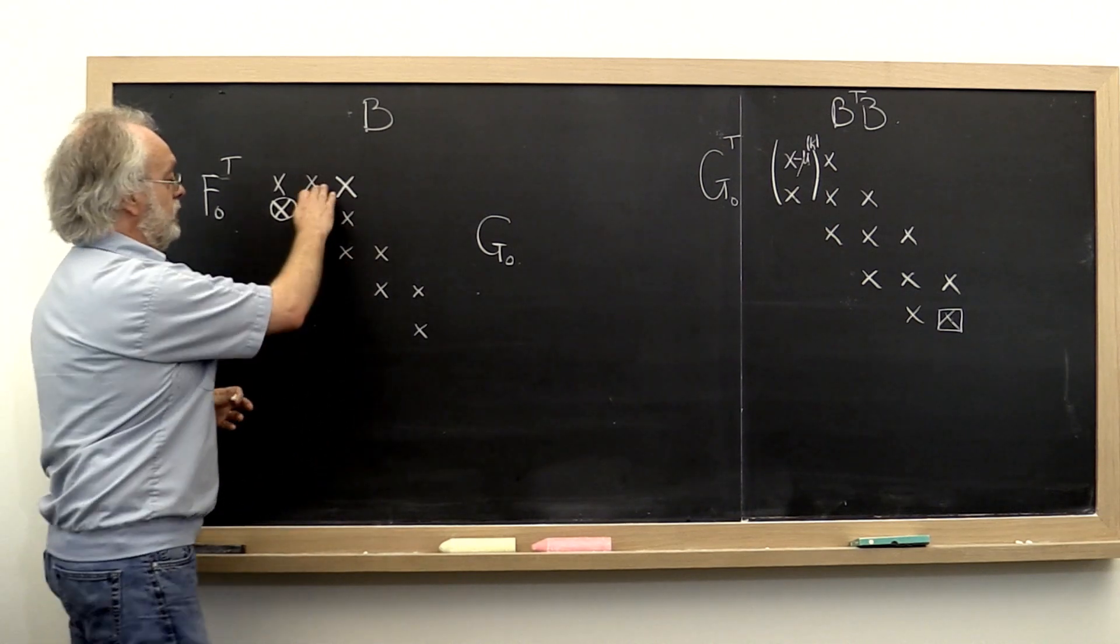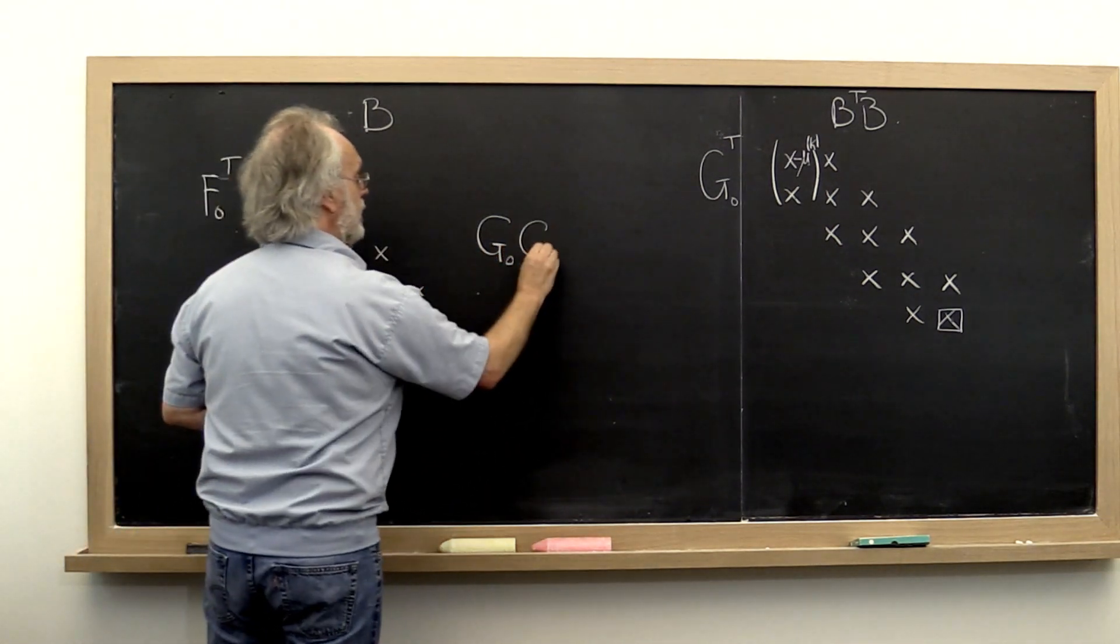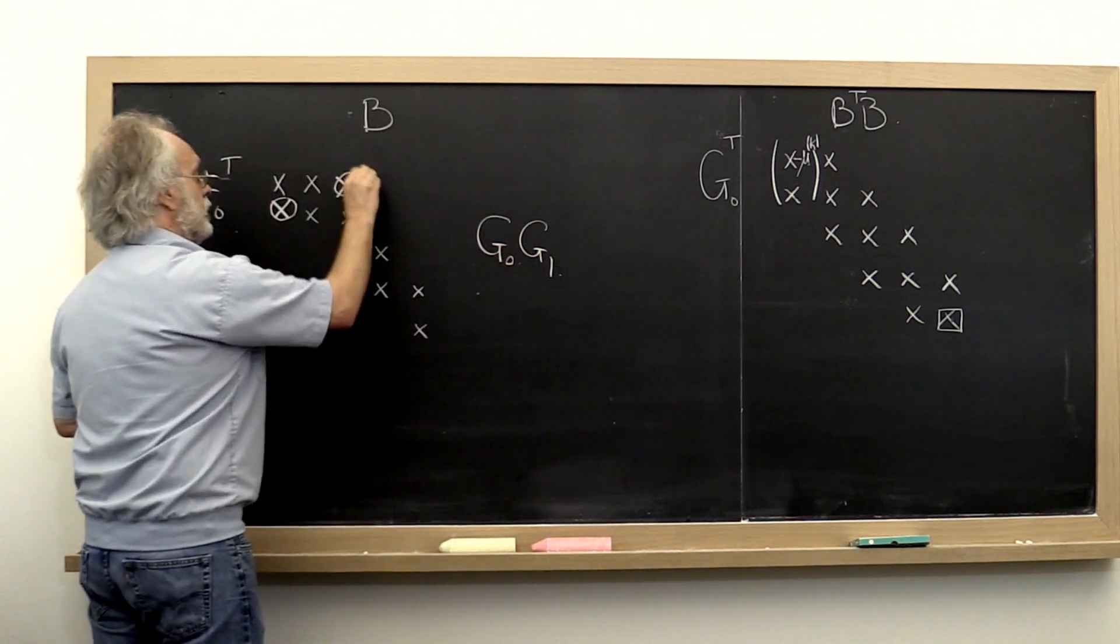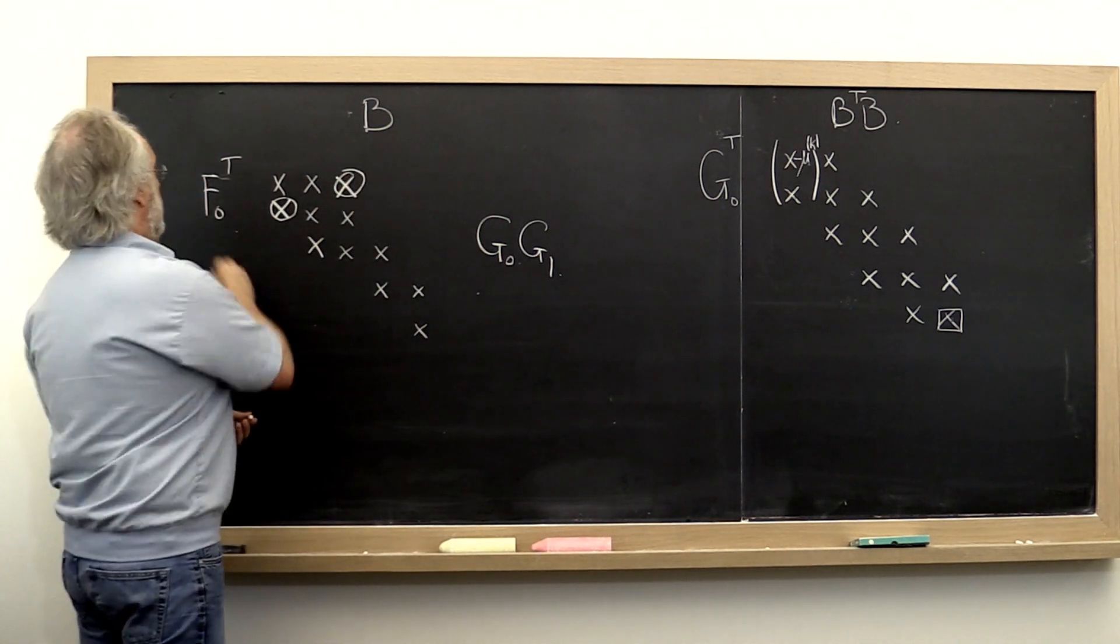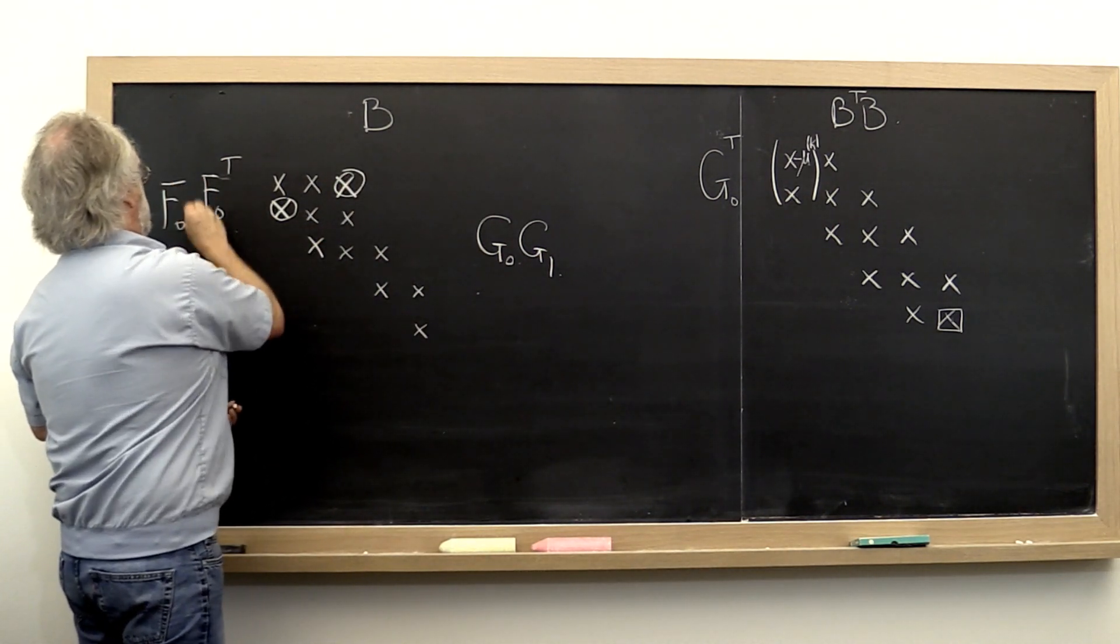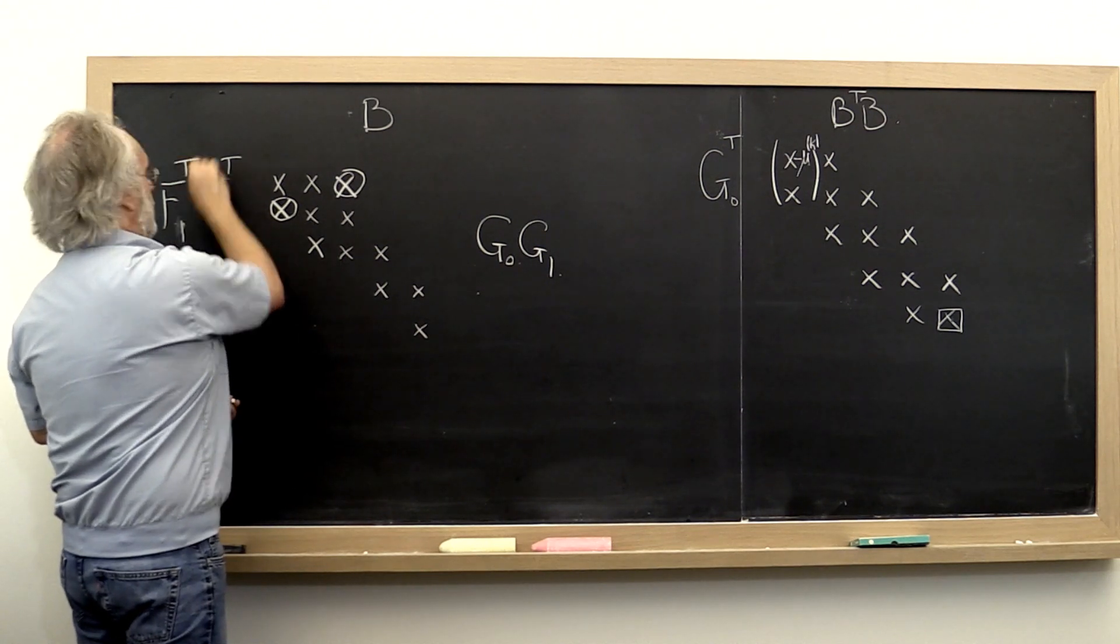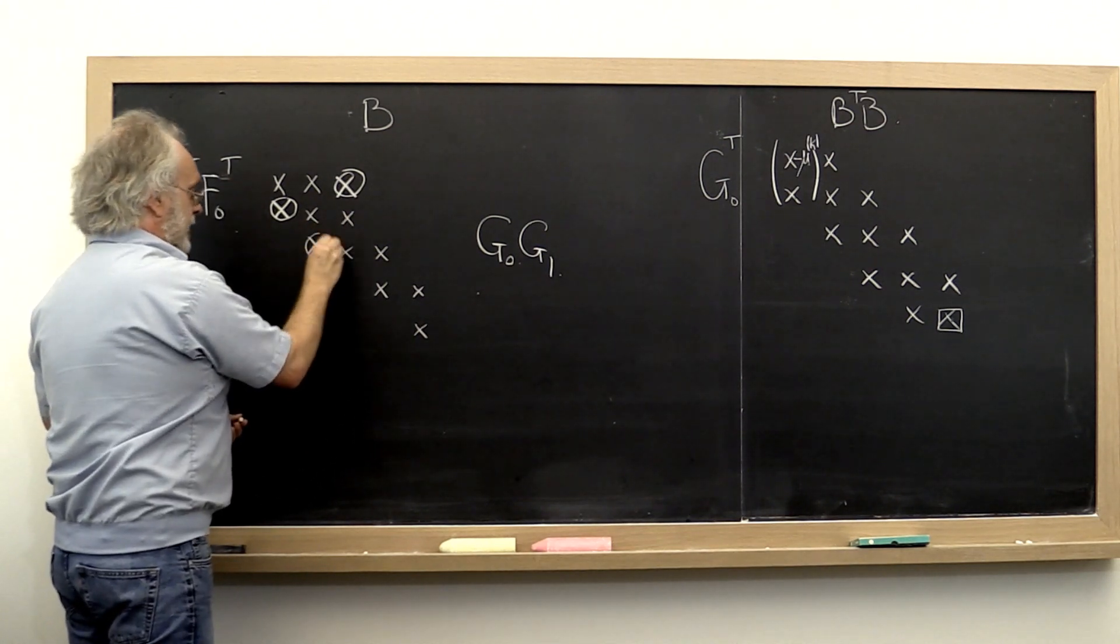So all we need to do is chase this out, compute another Givens rotation here, zeroing this out, filling that in, compute another Givens rotation from the left, zeroing this out.